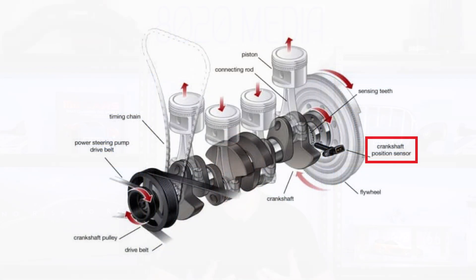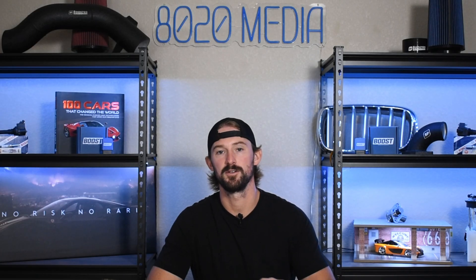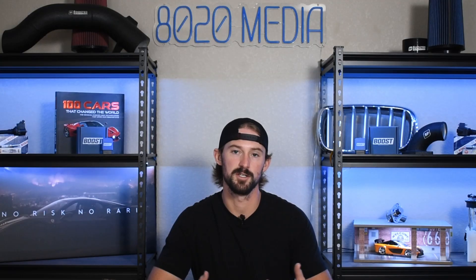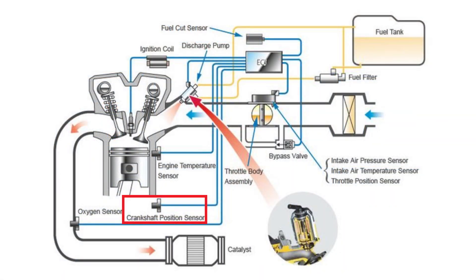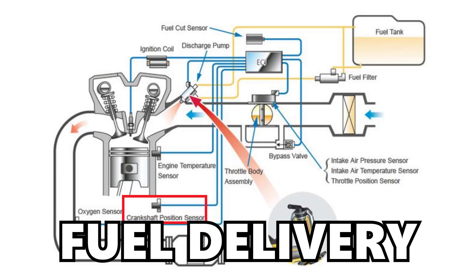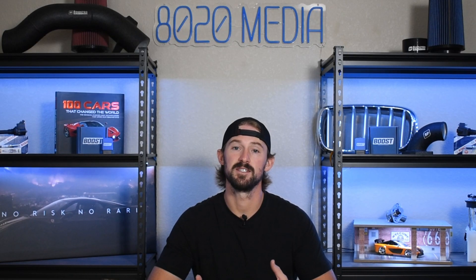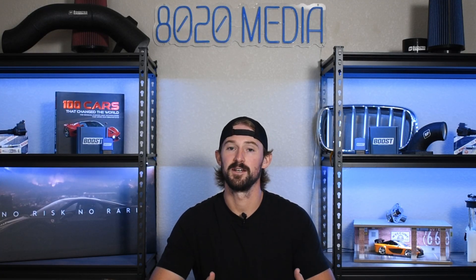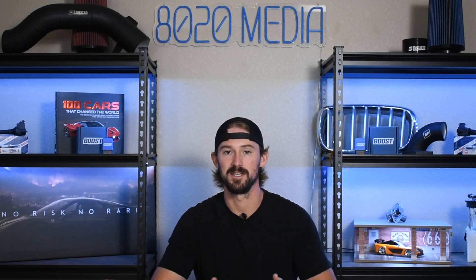Crankshaft position sensors are essentially magnets that sit right near the crankshaft, and what they do is measure how quickly the crankshaft is turning, which determines how many RPMs your engine is moving at. Your engine uses the RPMs, or the speed of the crankshaft, to determine ignition timing and fuel delivery. So if you have an issue with your crankshaft position sensor, your vehicle's computer doesn't know how fast the engine is moving, which means it doesn't know how much fuel to send into it or what the ignition timing should be set to.